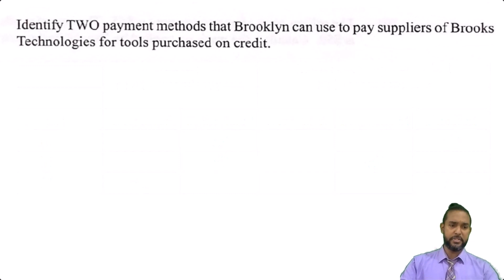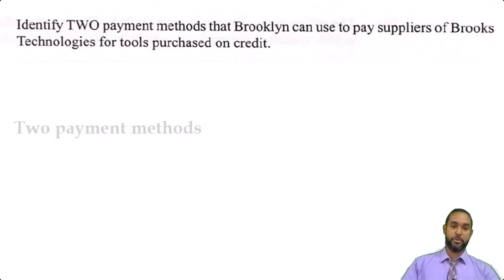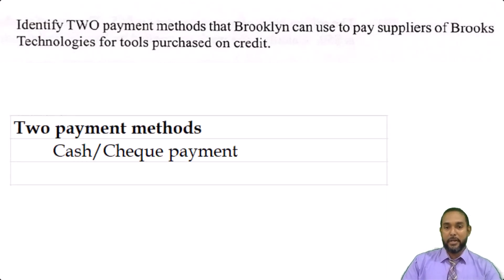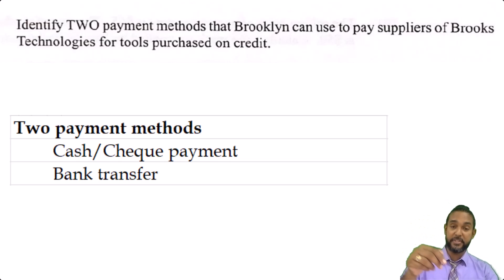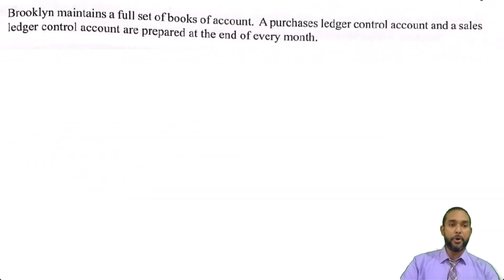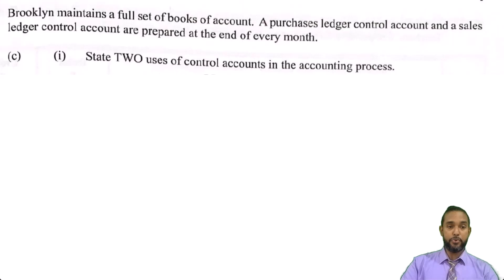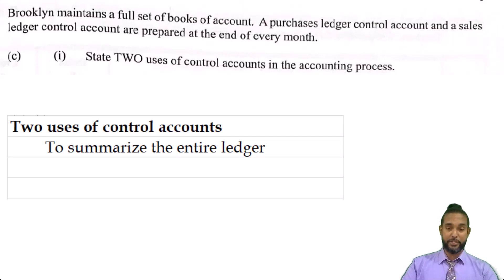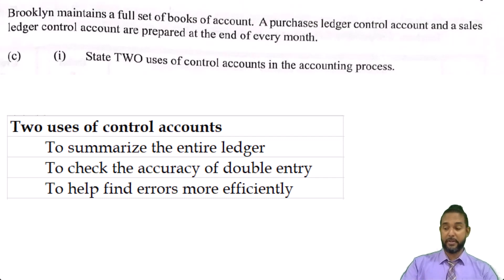Let's take a look at B part 2. It says: identify two payment methods that Brooklyn can use to pay suppliers of Brooks Technologies for tools purchased on credit. Two payment methods — you can either pay with cash, cheque, or a bank transfer. That list is not exhaustive; I'd invite you to put in the comments section below any other payment methods you could come up with. Now for item C: Brooklyn maintains a full set of books of account. A purchases ledger control account and a sales ledger control account are prepared at the end of every month. State two uses of control accounts in the accounting process. They summarize an entire ledger, which makes it easier to double-check the accuracy of double entry and easier to find errors.